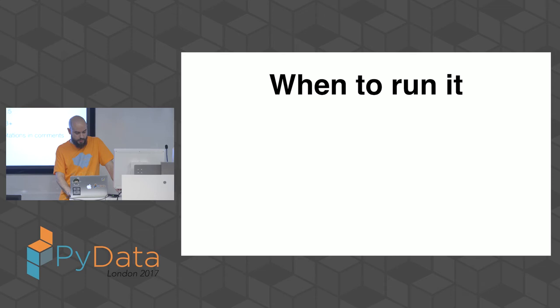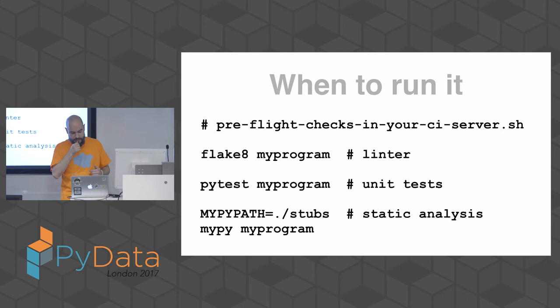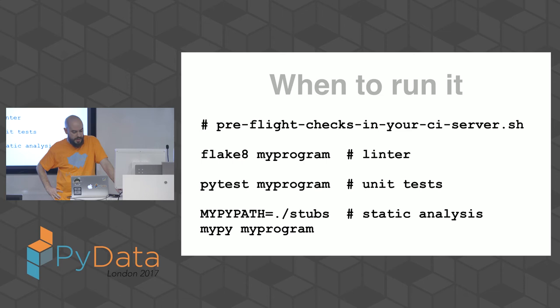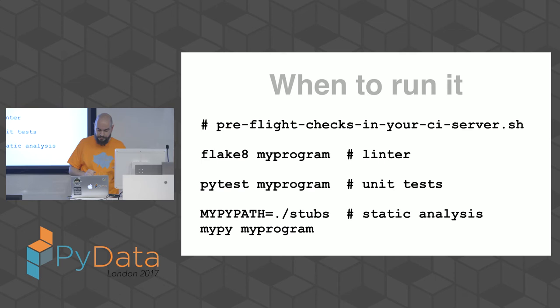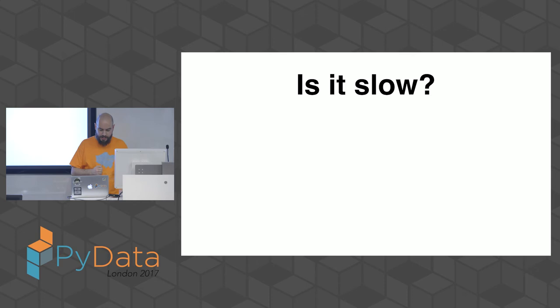When do you run static checking? You can run it from the command line as often as you want. I like to wrap it into a shell script integrated with your build or CI server, grouping it together with a linter like flake8 or pylint for additional static checks, unit tests run with nose or pytest, and then the static type analysis with mypy.